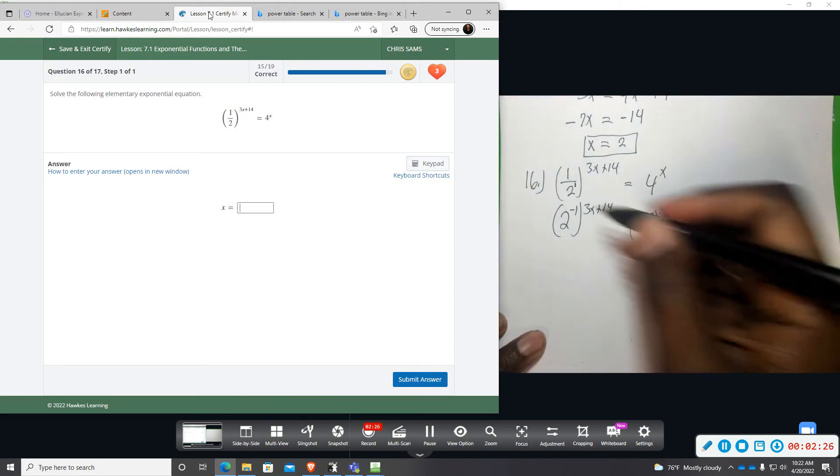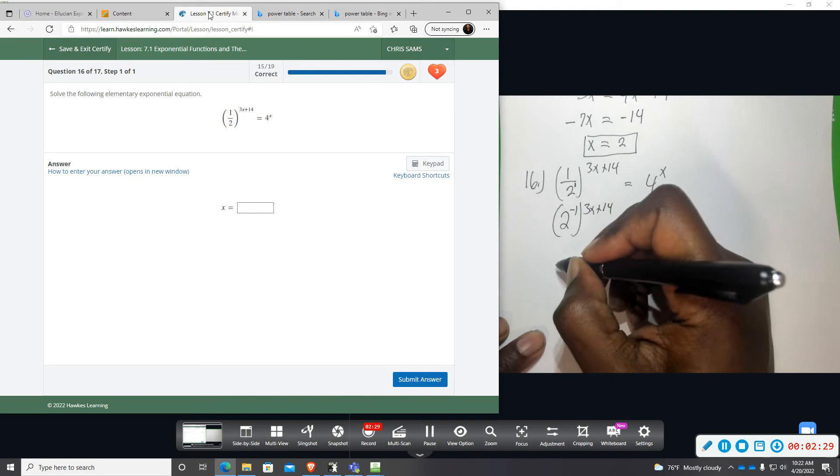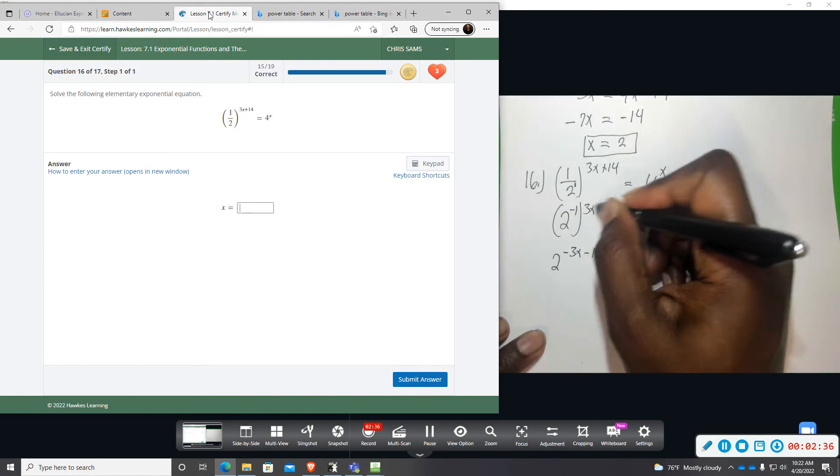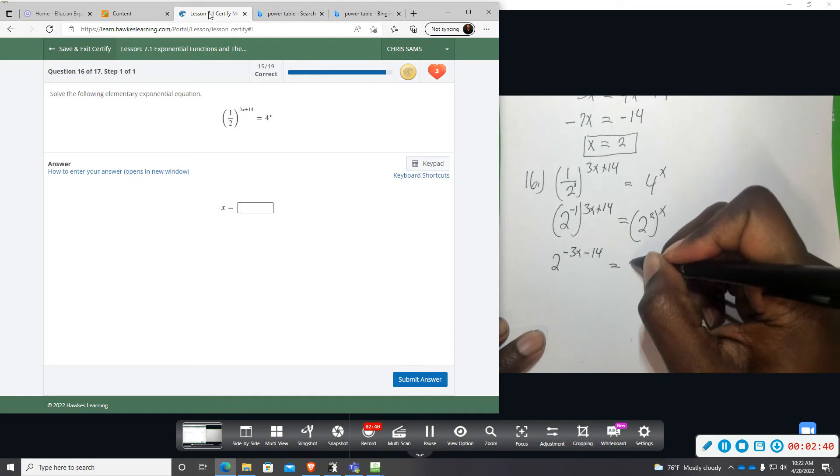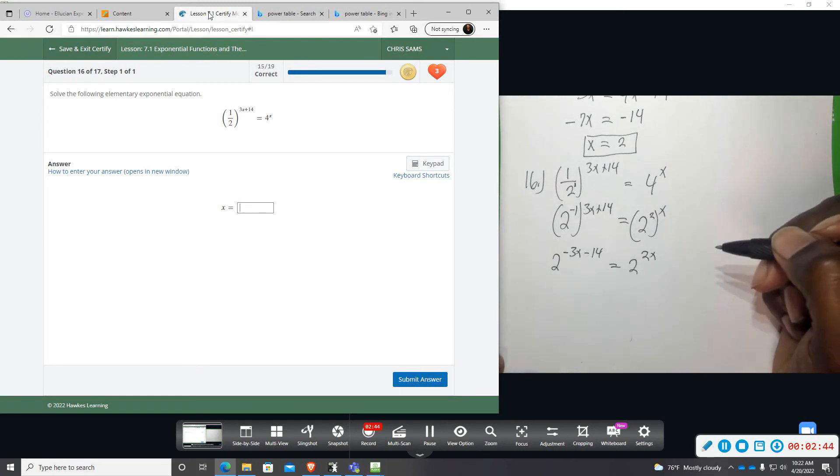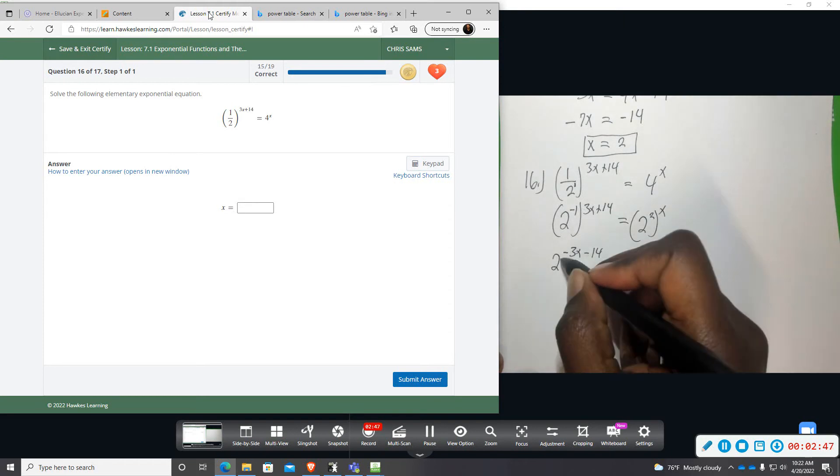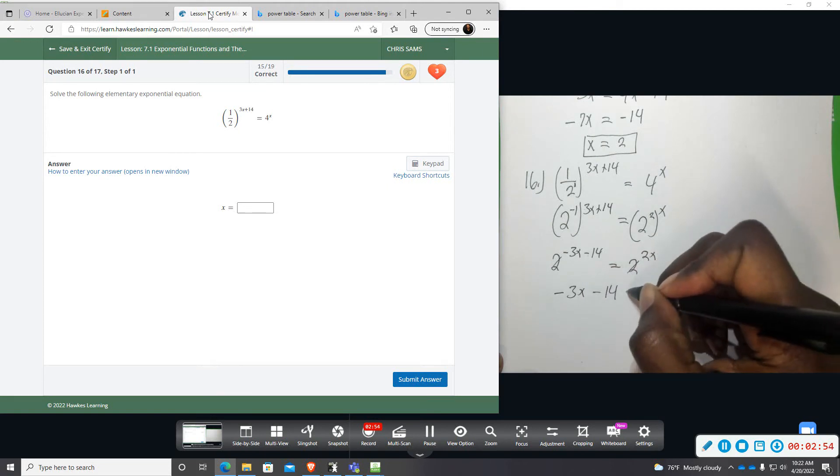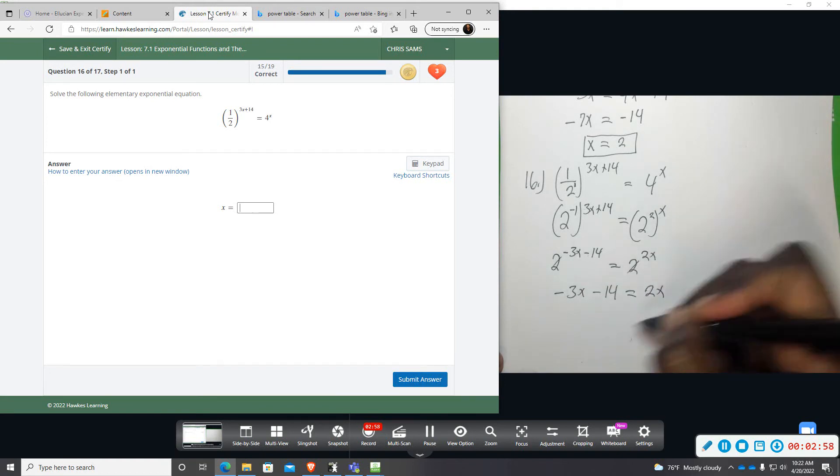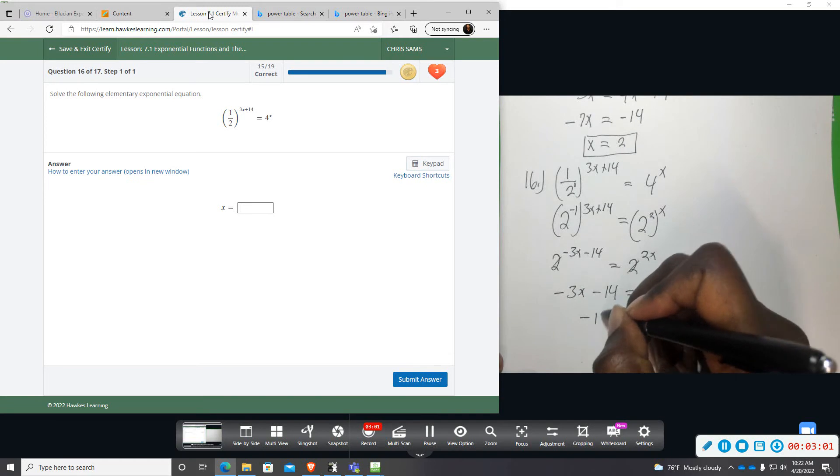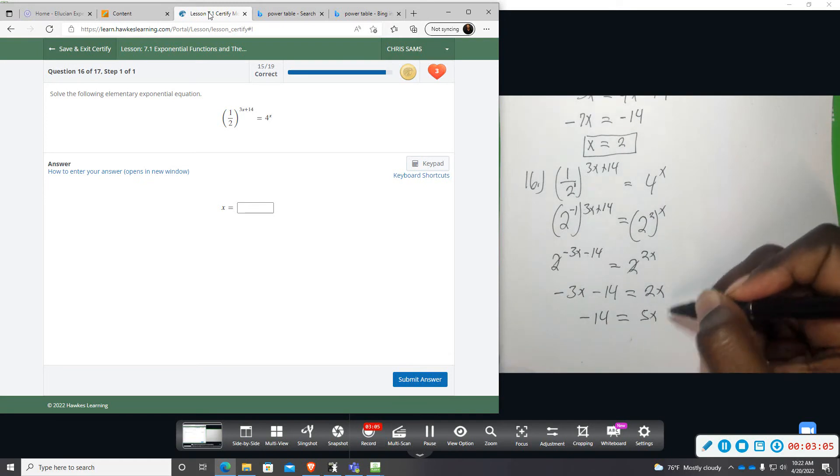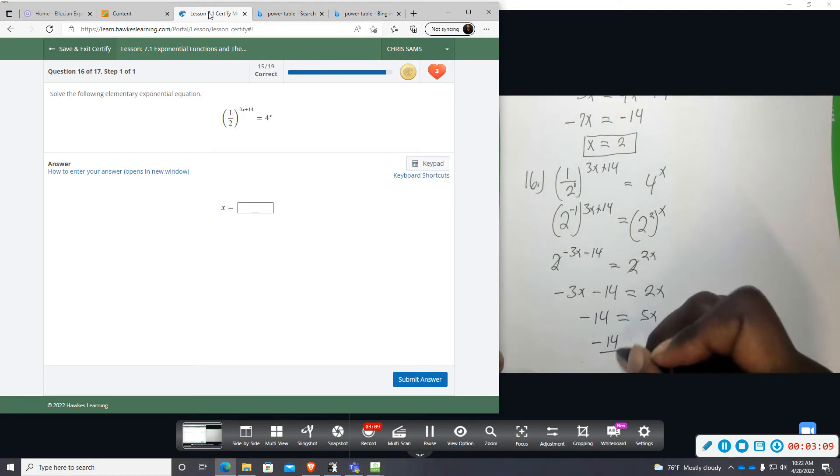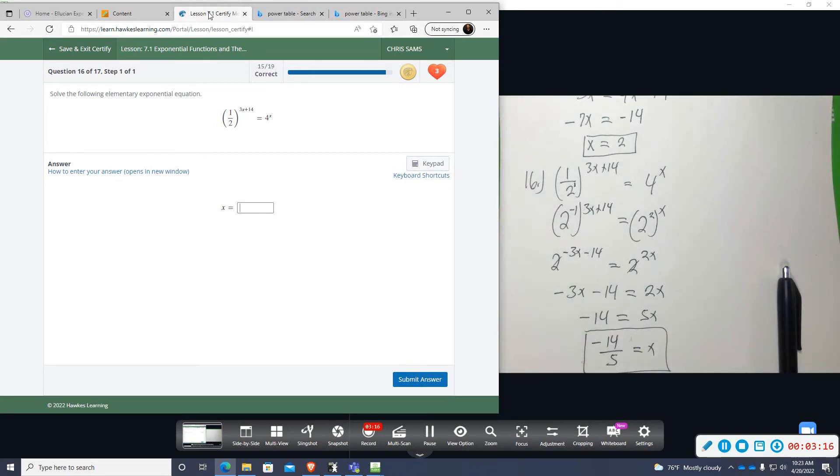This is going to be 2 to the 2x power. And now I'm going to distribute multiply negative 1 times both these guys. So I have 2 to the negative 3x minus 14. Over here we will just have 2 to the 2x power. Same base now. I can ignore the 2 and focus on the negative 3x minus 14 is equal to 2x. We will add 3x to the opposite and that will give us a negative 14 equals 5x. And if you divide by 5 you get negative 14 over 5 equals x.